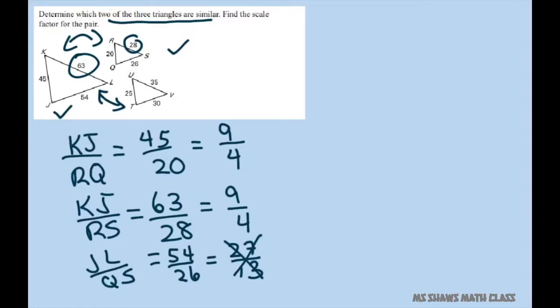So we have KJ over UT. And that gives you 45 over 25. And if you divide both of those by 5, the numerator and denominator, you're going to get 9 fifths.